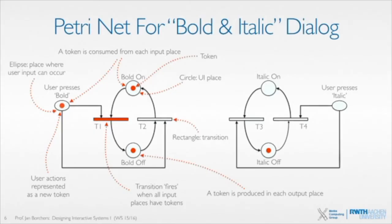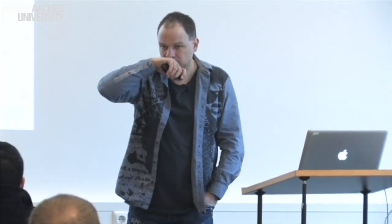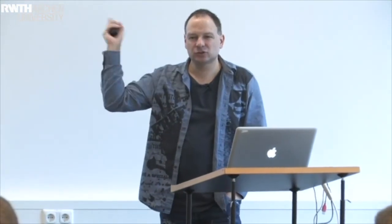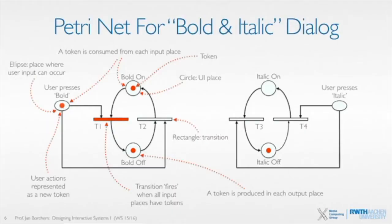So how do we now create a dialogue that also models italics? It should be pretty straightforward at this point. We made the same thing for italics — just duplicate the structure. And why does this work? It's because of that one thing that Petri Nets have that is very different from state transition networks: the state of a Petri Net is represented by all the tokens in the network.